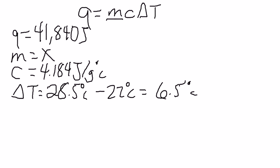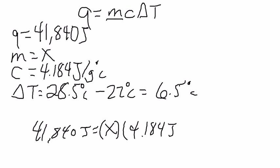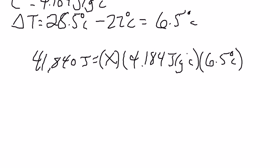Now we just need to plug these numbers into our equation. So we have 41,840 joules is equal to a mass, that's X, times the specific heat of water, 4.184 joules per gram degrees Celsius, times delta T, which is 6.5 degrees Celsius.